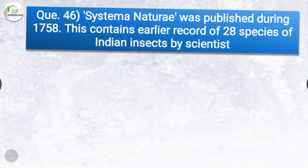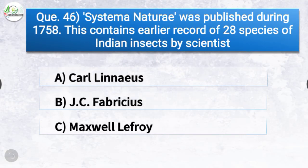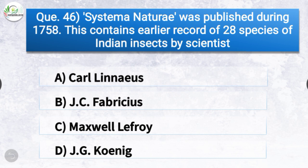Question number forty-six: Systema Naturae was published in 1758. This contains earlier records of 28 species of Indian insects by a scientist. The correct answer is option A, Carl Linnaeus — Systema Naturae was published in 1758 and contains earlier records of 28 species of Indian insects by scientist Carl Linnaeus.